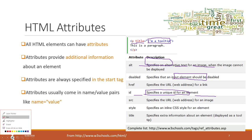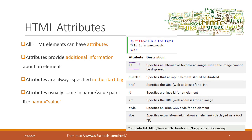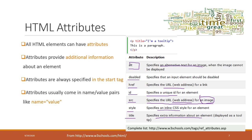Here are some common attributes: ALT provides alternative text for an image when it cannot be displayed. Disabled specifies that an input element should be disabled. HREF is the URL for a link. ID gives a unique ID to an element. Source specifies the URL for an image, which can be local or on a website. Style specifies inline CSS. Title provides extra information and can appear as a tooltip.